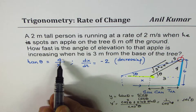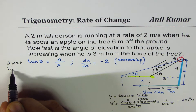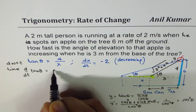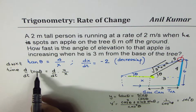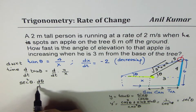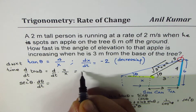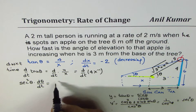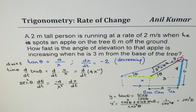So what we have is tan θ = 4/x. Let's differentiate both sides with respect to time. So: d/dt(tan θ) = d/dt(4/x). Differentiating: secant squared θ · dθ/dt = −4/x² · dx/dt. That is the derivative of 4/x, treating it as 4x⁻¹.